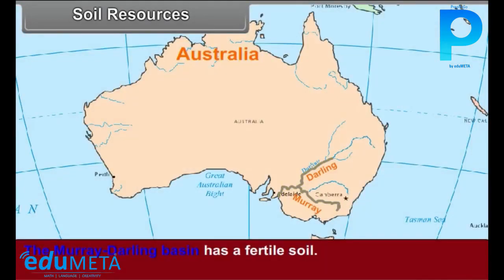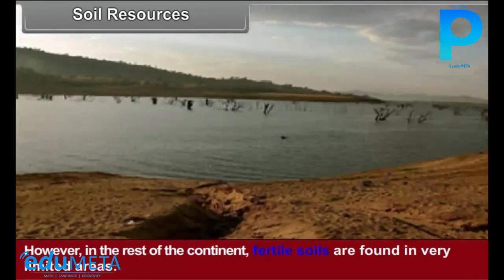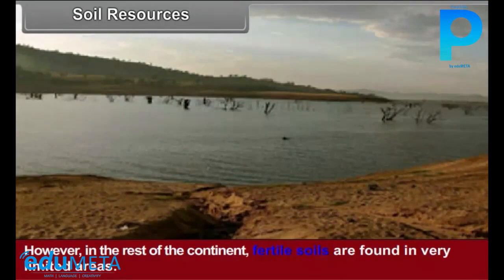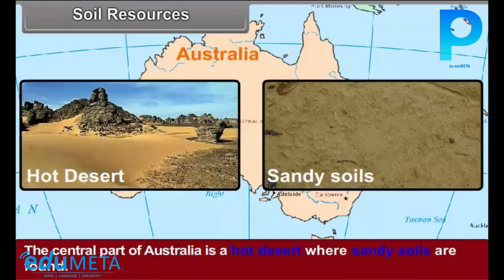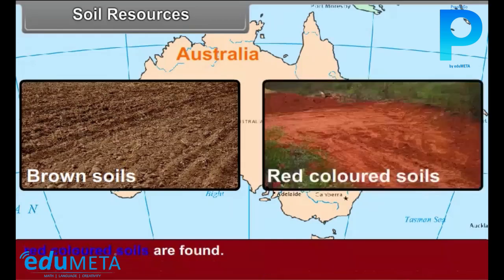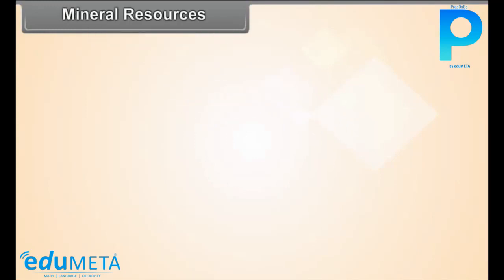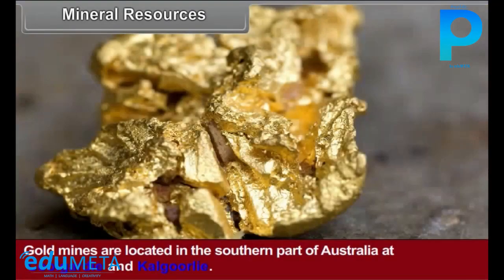Soil Resources: The Murray-Darling basin has fertile soil. However, in the rest of the continent, fertile soils are found in very limited areas. The central part of Australia is a hot desert where sandy soils are found. Brown soils are found in the southern areas of Mediterranean climate, whereas in the northern regions of monsoon-type climate, red-colored soils are found.